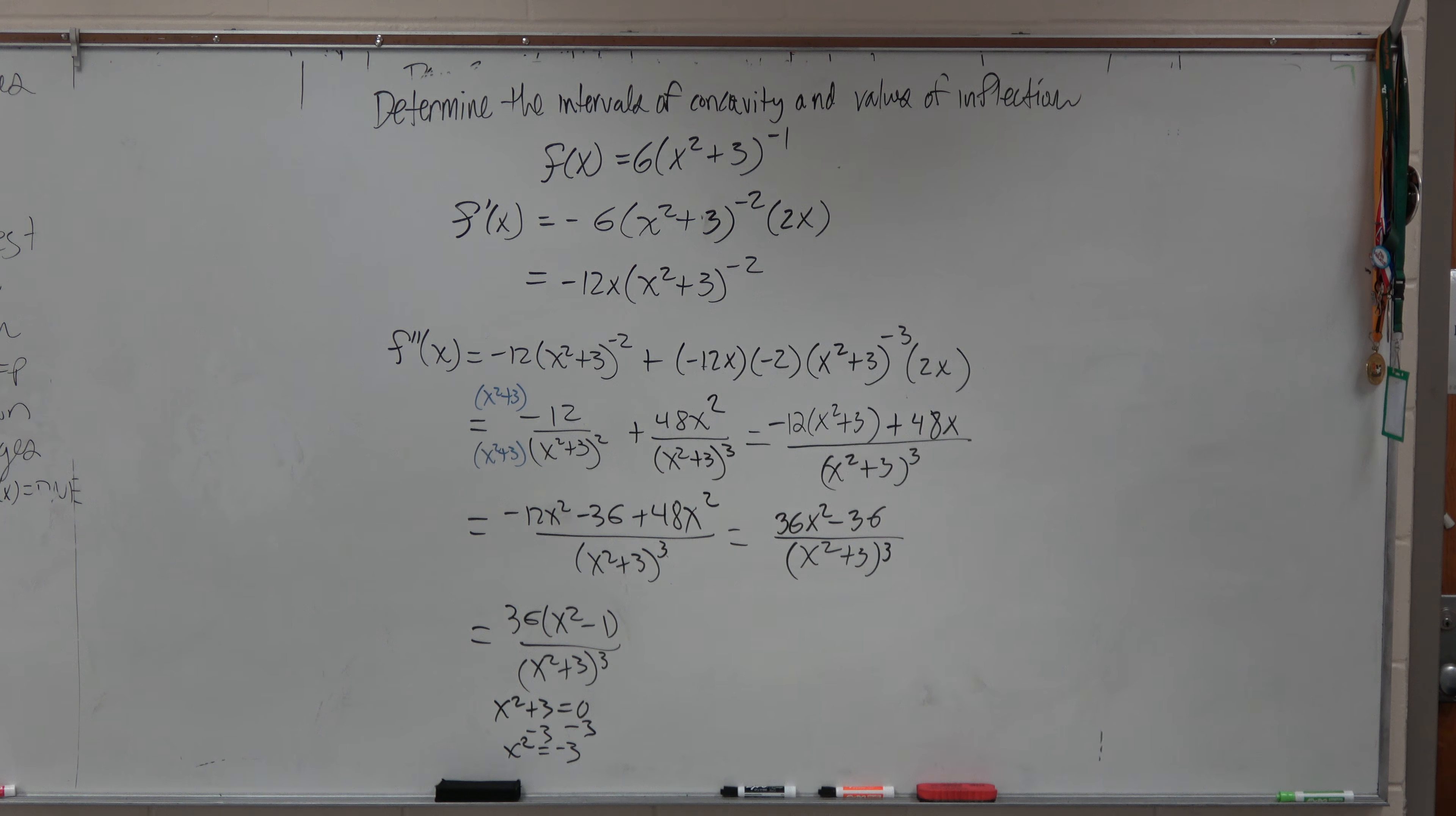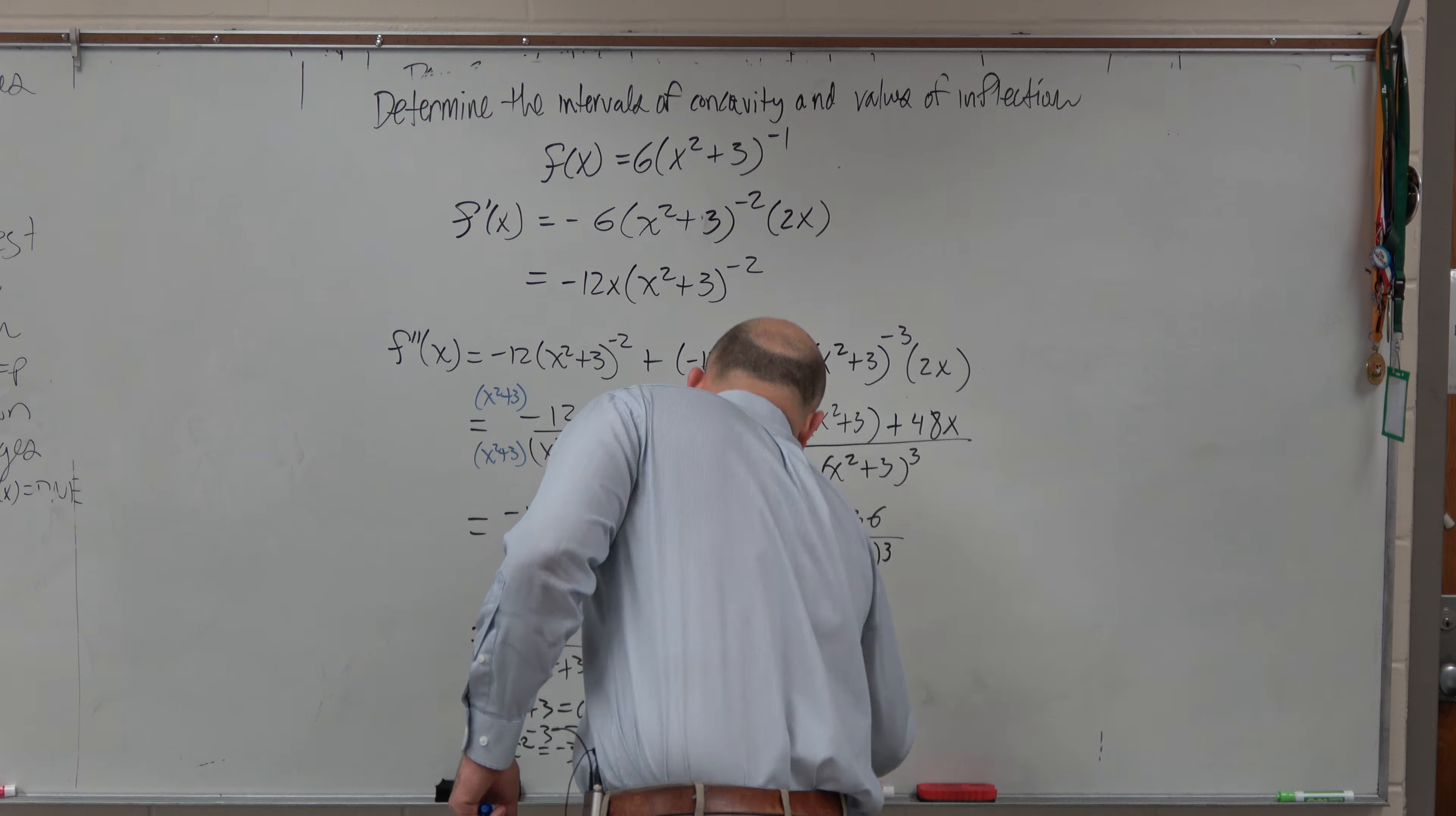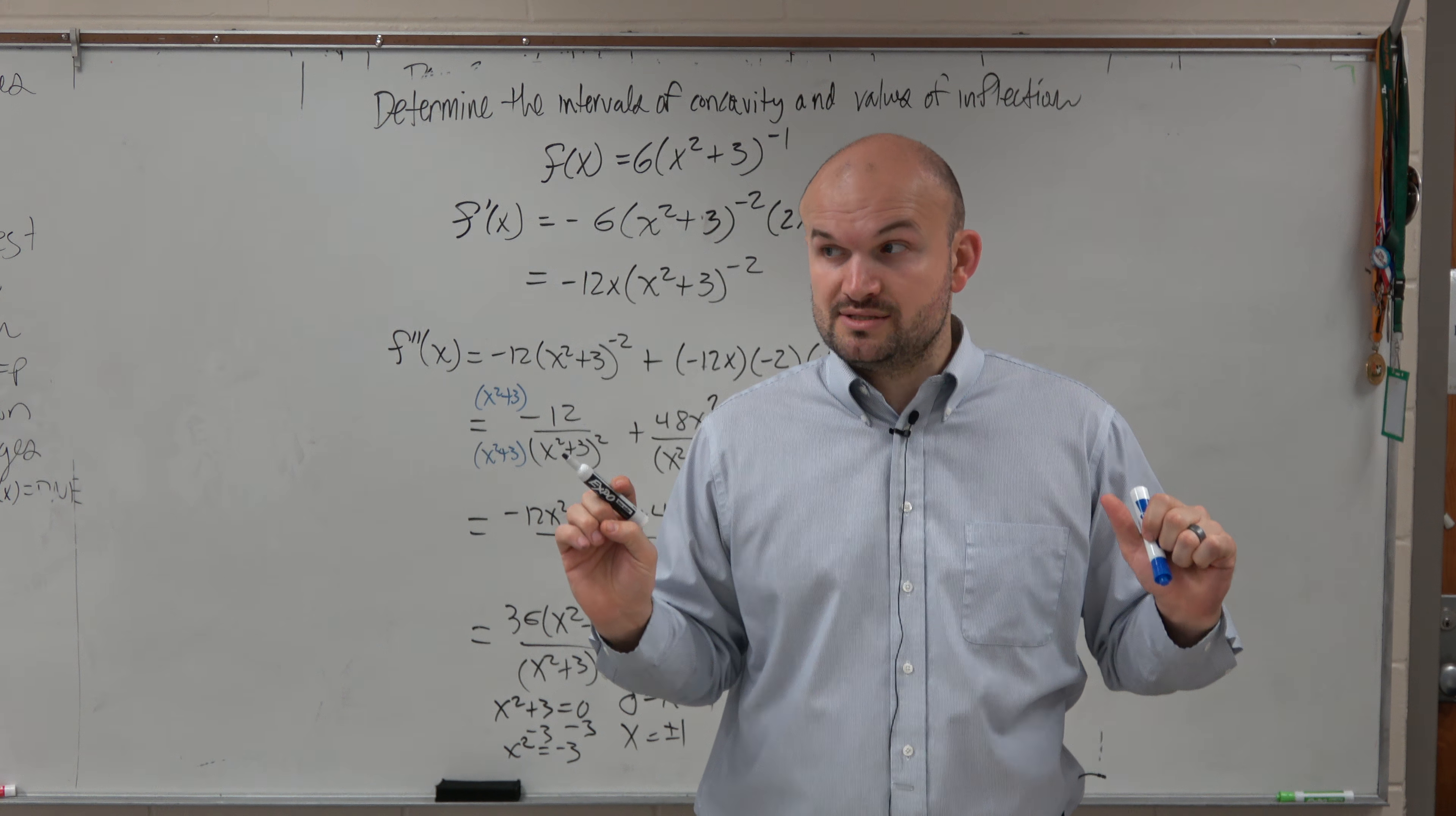But now, let's look about what about when it's equal to 0? Well, for equal to 0, remember we looked at the point, all you do is set your numerator equal to 0. So if you set the numerator equal to 0, you would have 0 is equal to 36 times x squared minus 1. We'll just divide out of 36 on both sides. That's kind of easy. And then you have 0 equals x squared minus 1. Add 1 to the other side. Take the square root. x is equal to plus or minus 1. So our possible points of inflection are plus or minus 1.